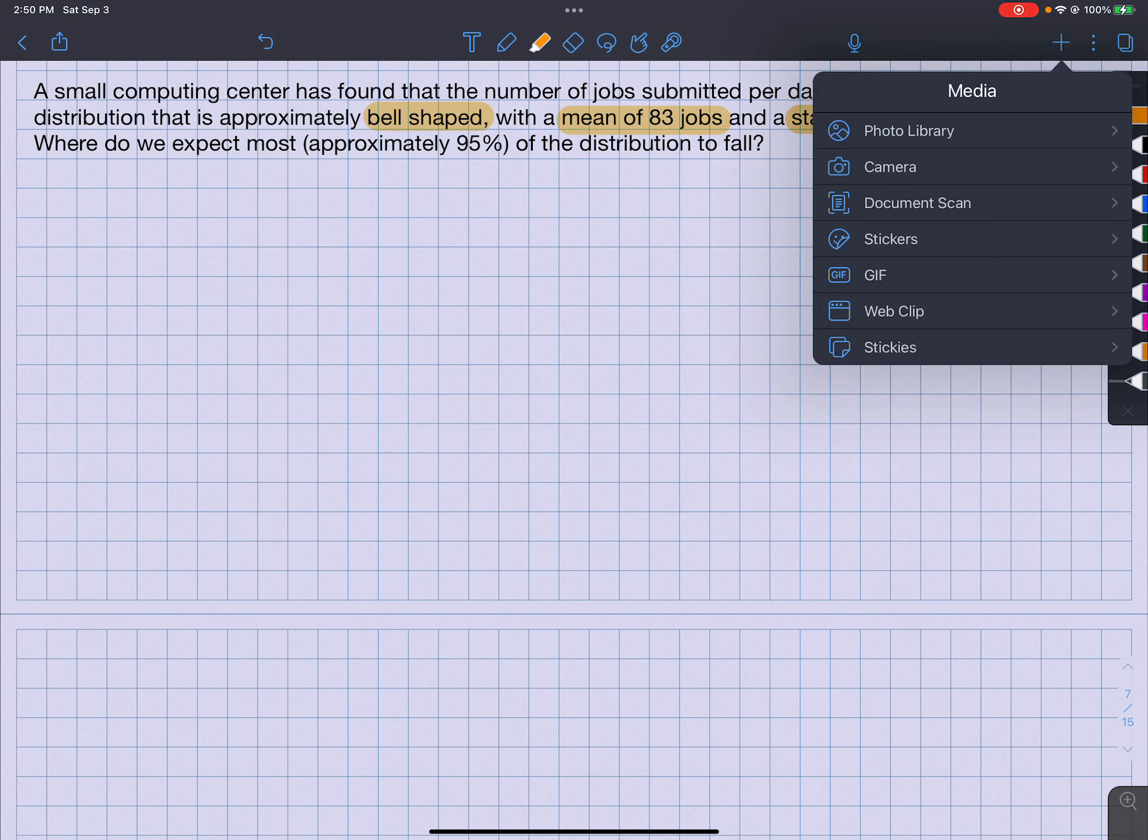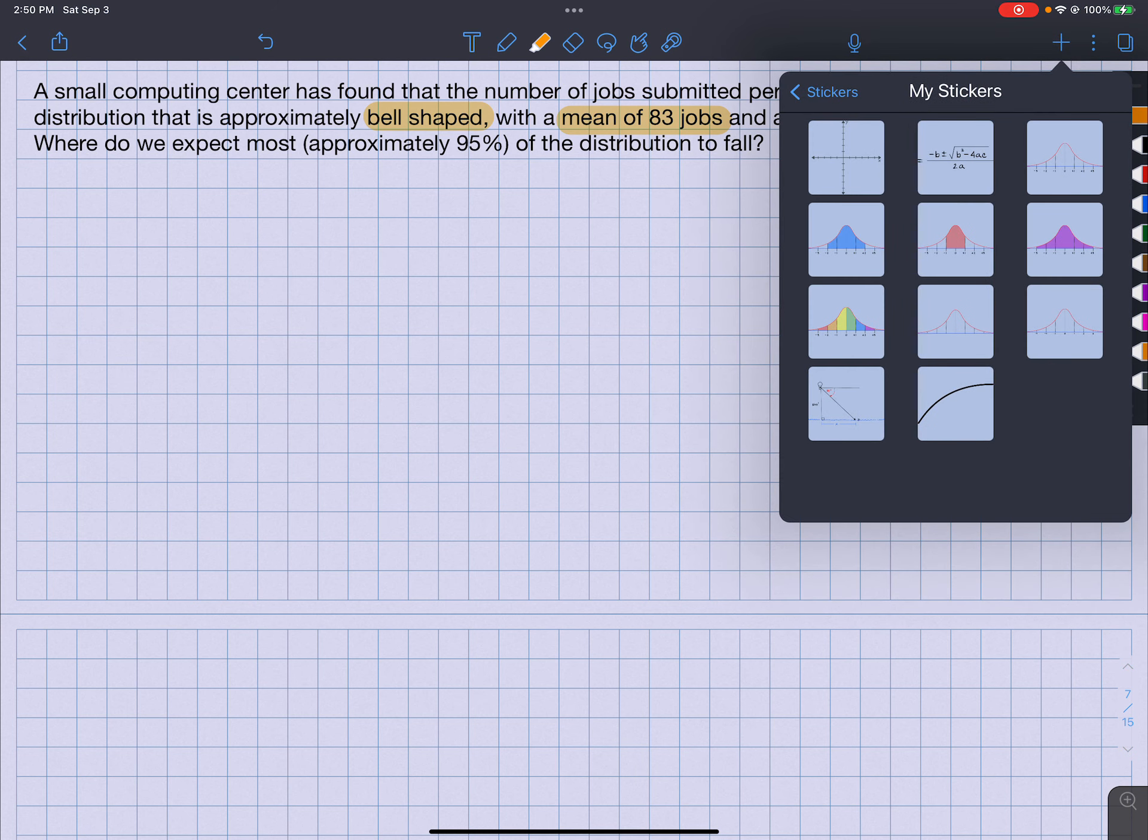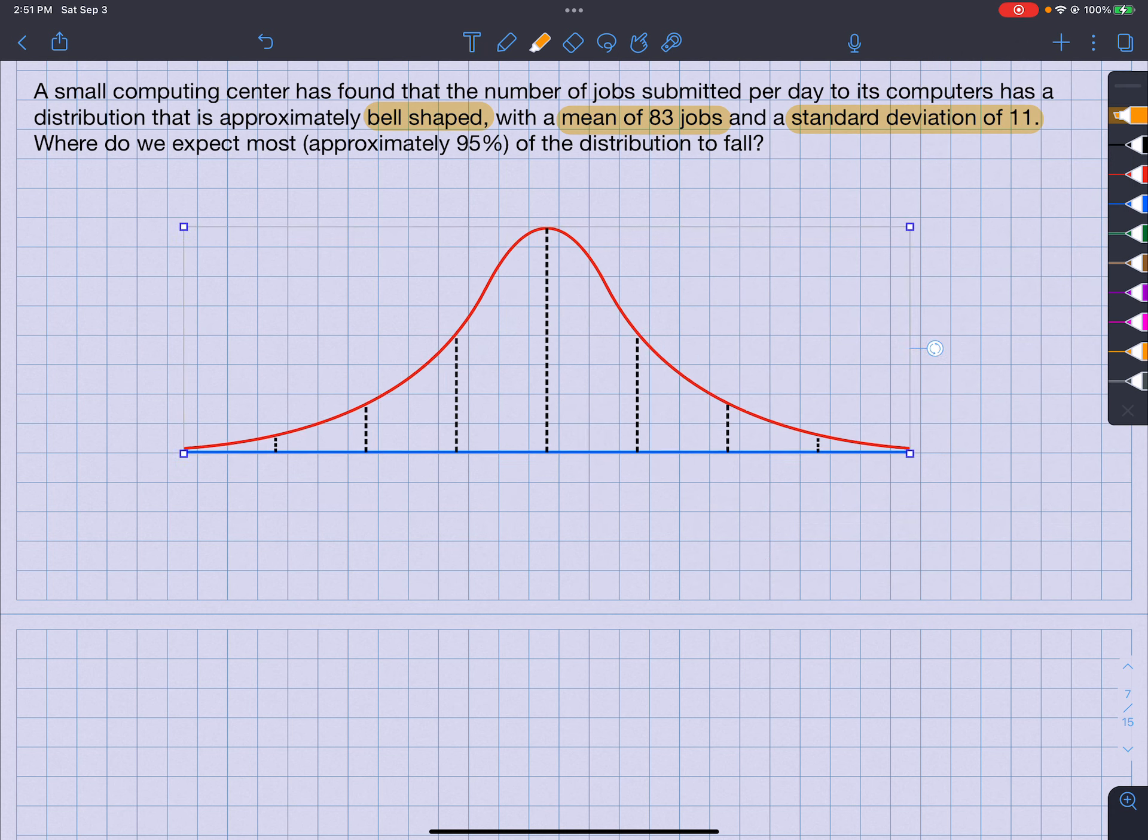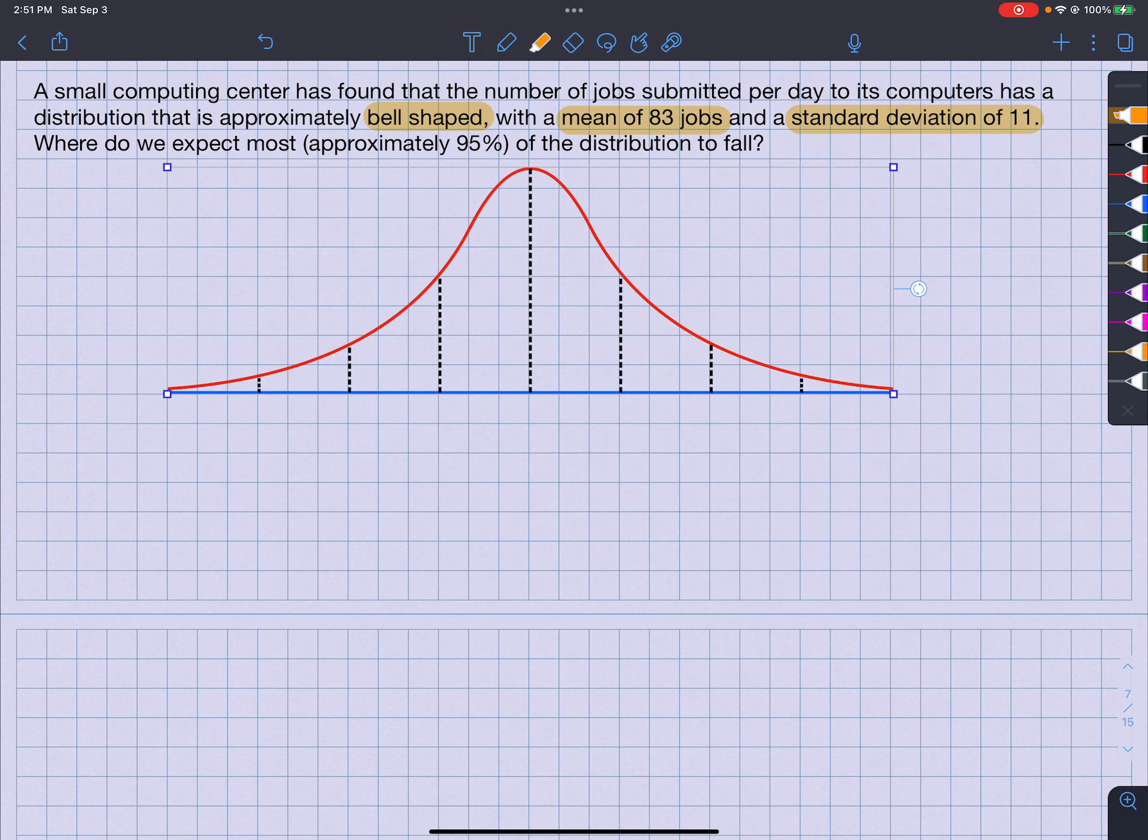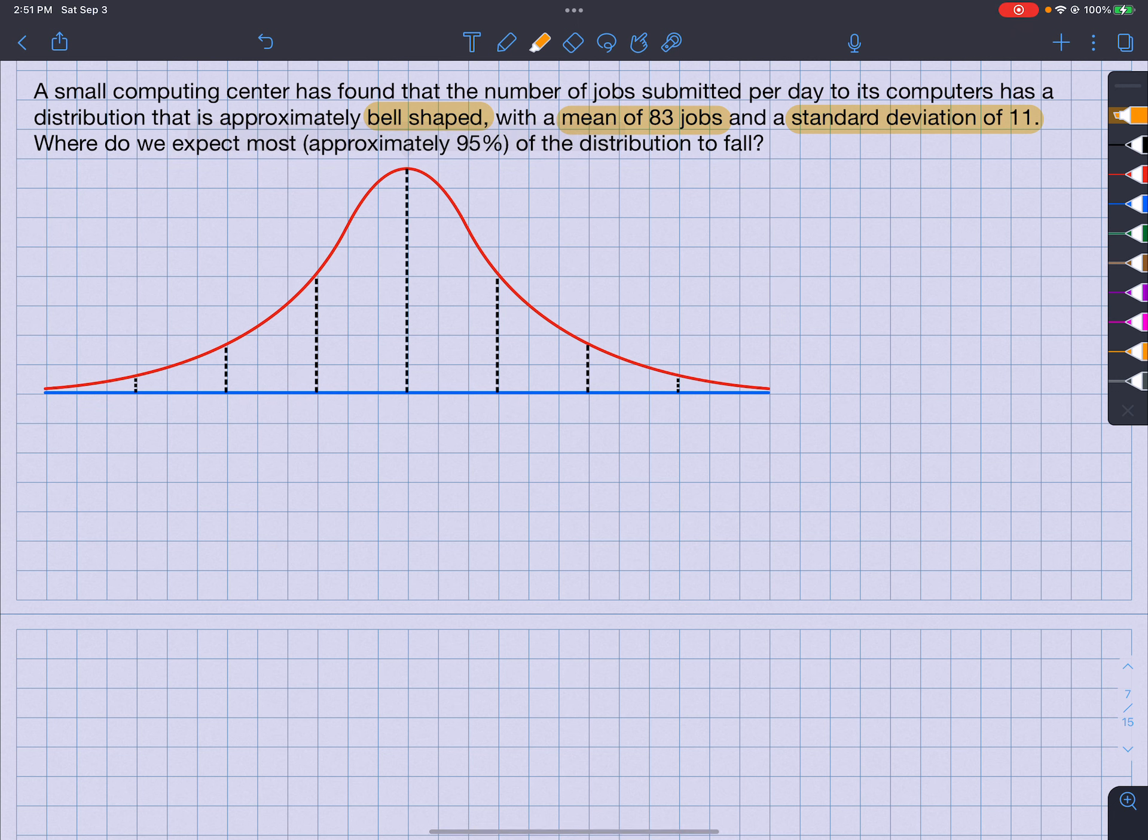So once it says bell-shaped, guys, I automatically go, let's throw one of these on there. Right? I wasn't trying to favorite it, but okay. Can't change it anyways. I just want to add it. There I go. So it says bell-shaped. I go, look, I put bell-shaped curve here.